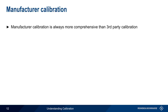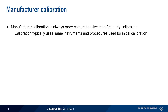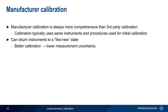Compared to third-party calibration, manufacturer calibration is always more comprehensive and often uses the same instruments and procedures that were used for the instrument's initial calibration during production. Because of this, a manufacturer calibration can return instruments to a factory or like-new condition. This higher-quality calibration also provides lower measurement uncertainty and all of the benefits associated with lower uncertainty.